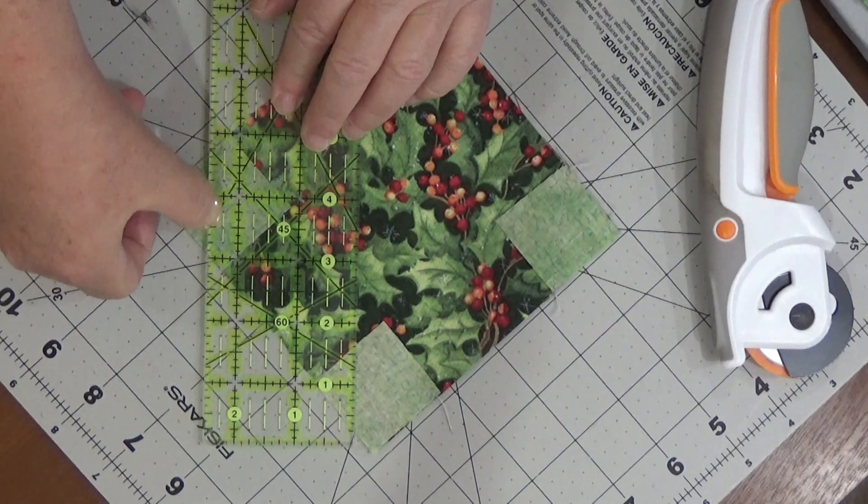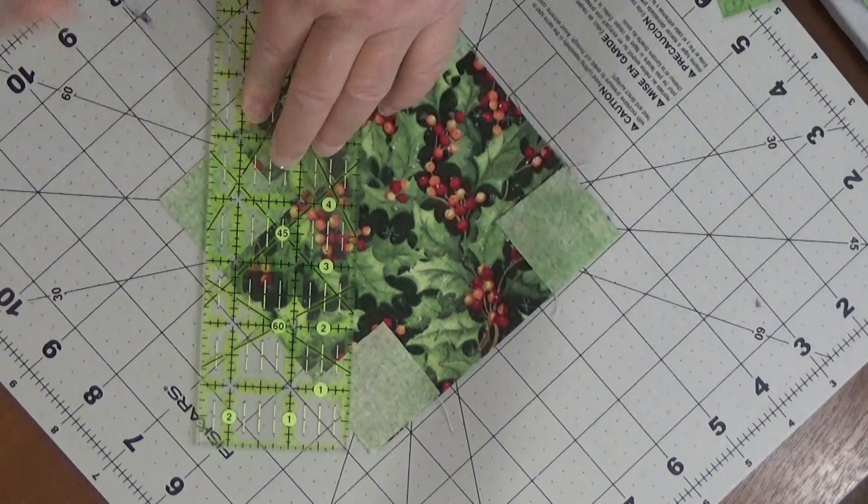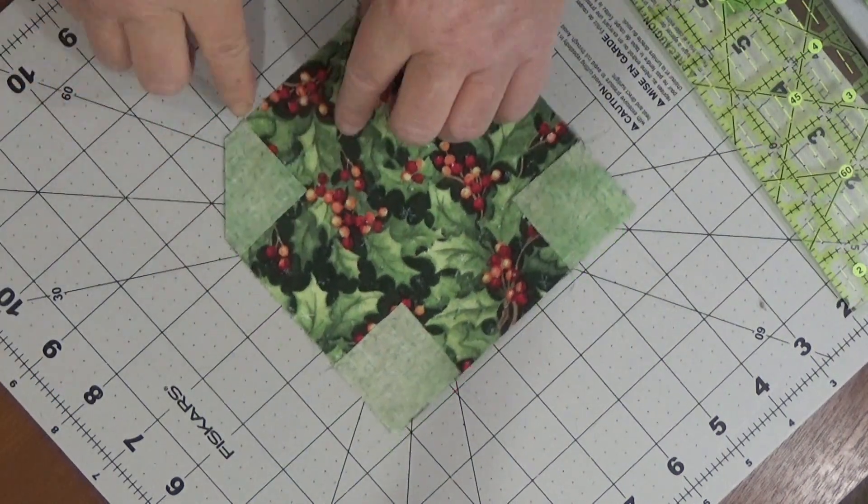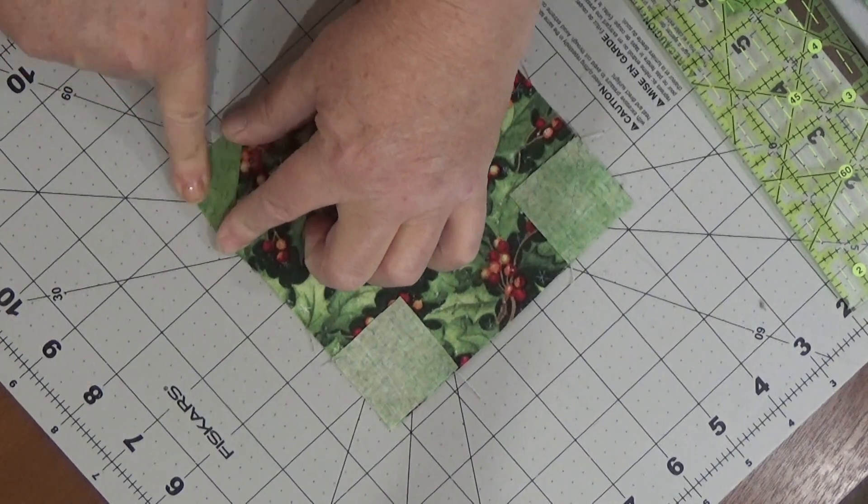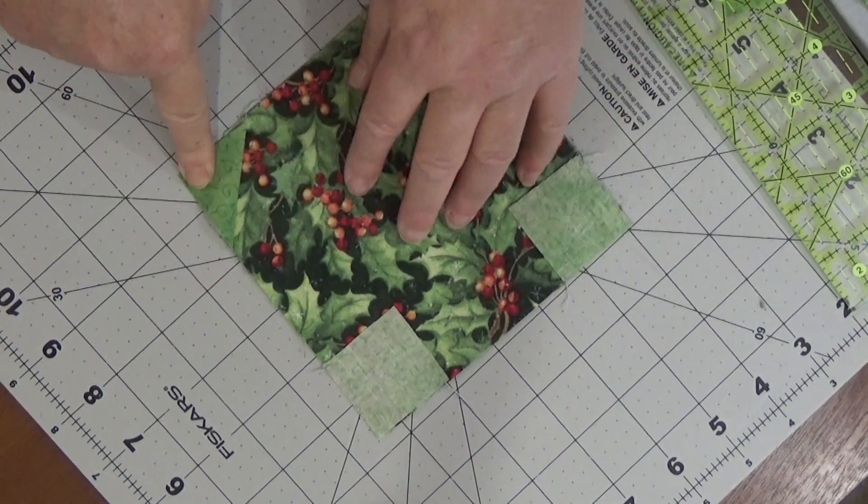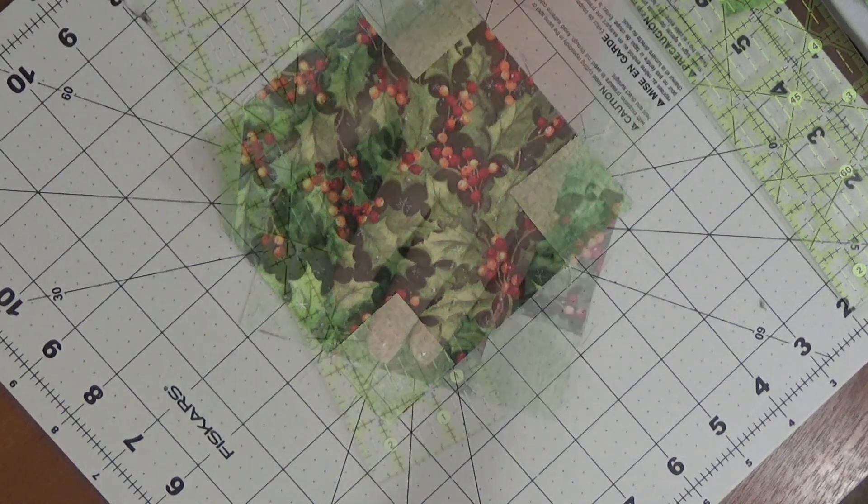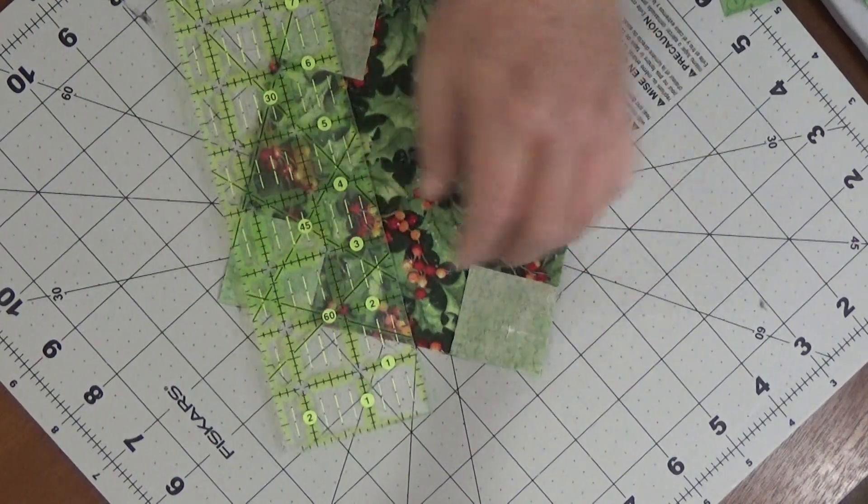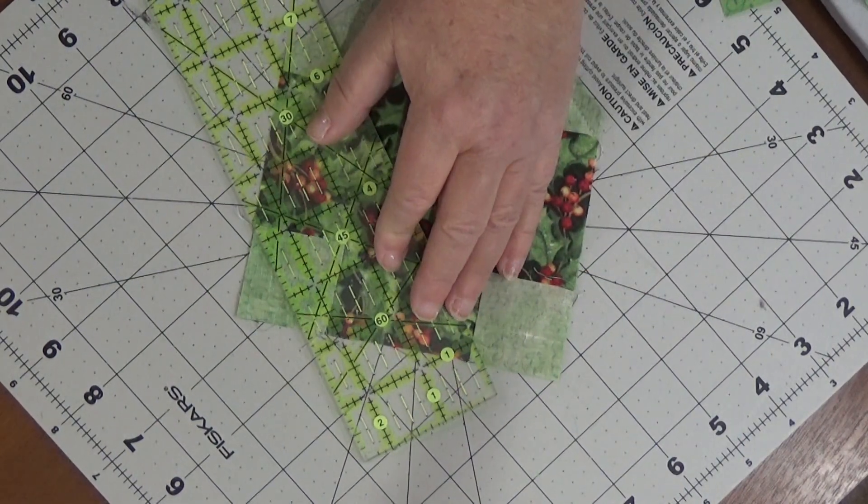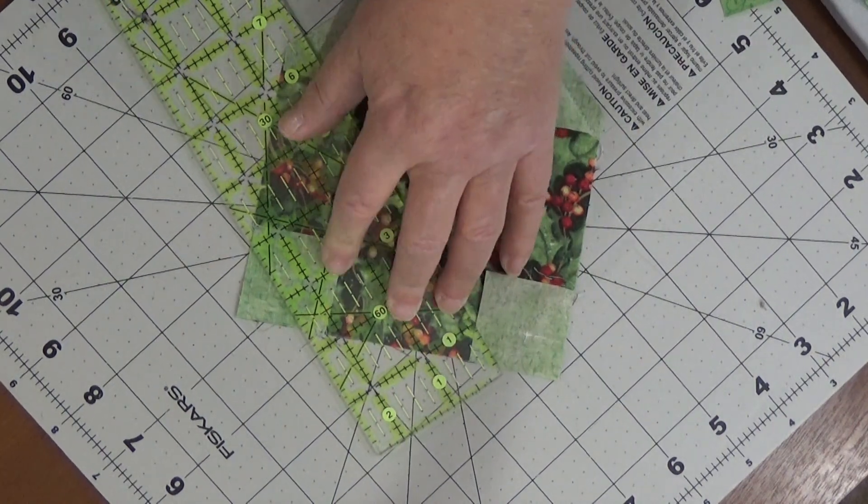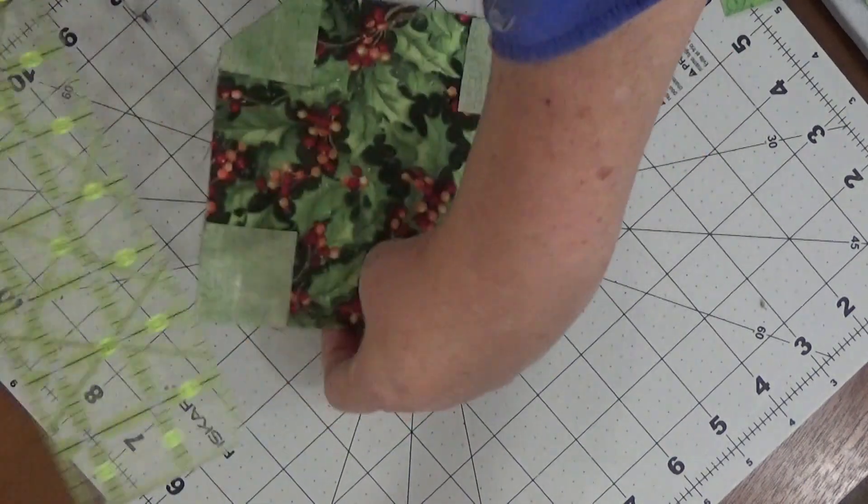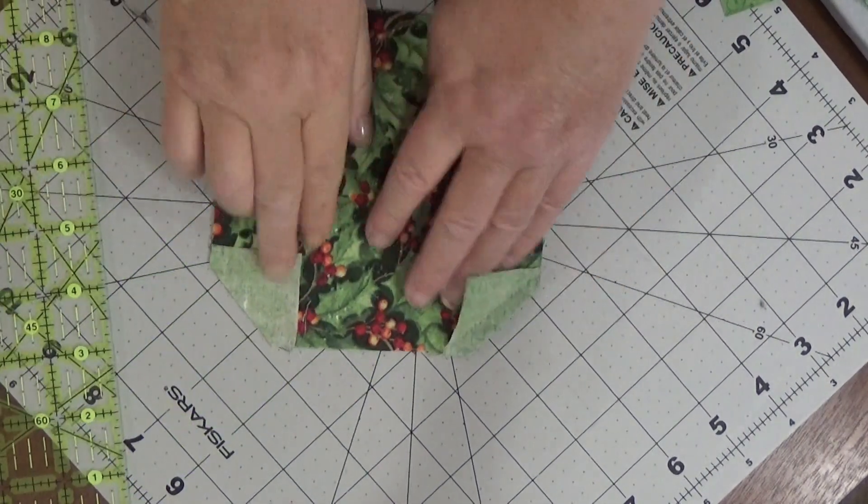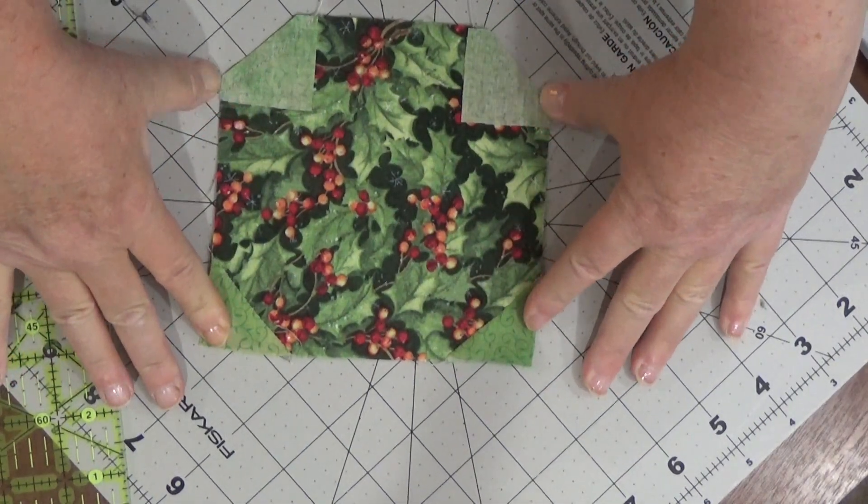And I have my quarter inch line right there, right on my seam. Take it off of safety. I'm going to do that to all four corners and I'm going to press it down. Okay, and that's my background, that's my ornament. So I'm going to do that on all four corners and then I'm going to press all four corners open.